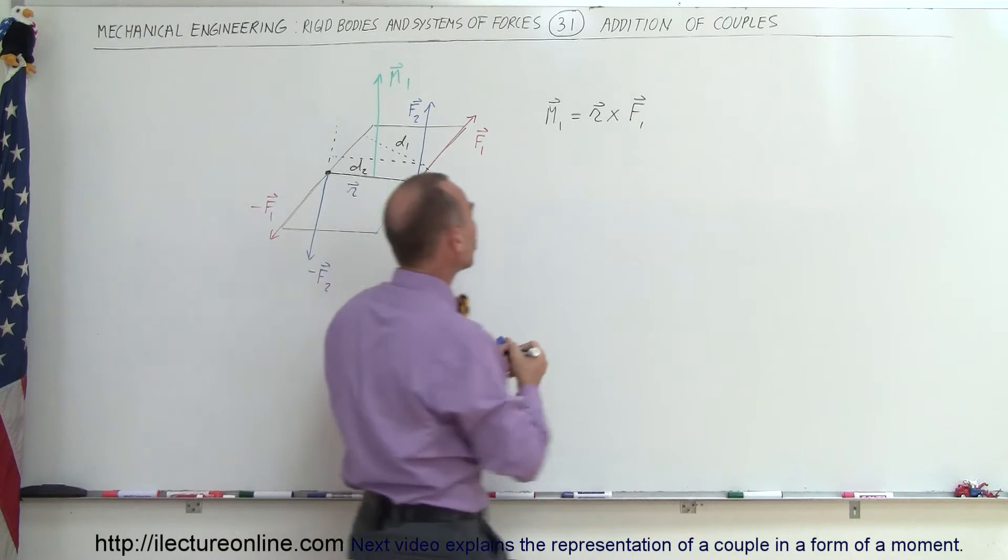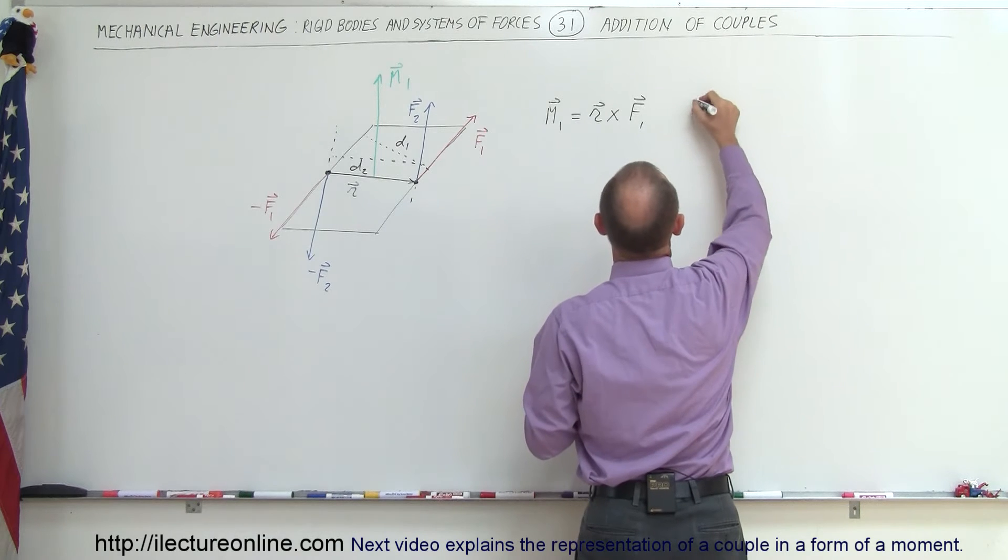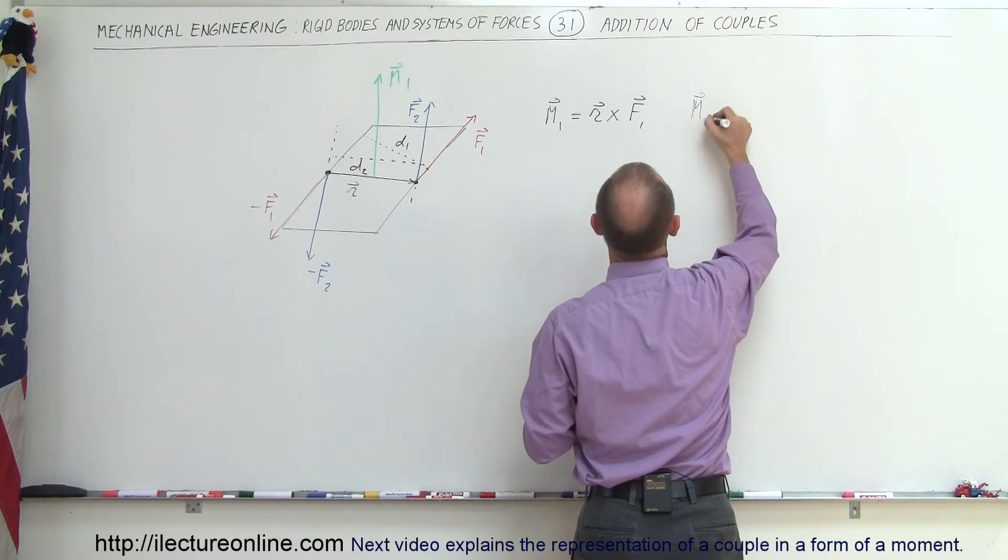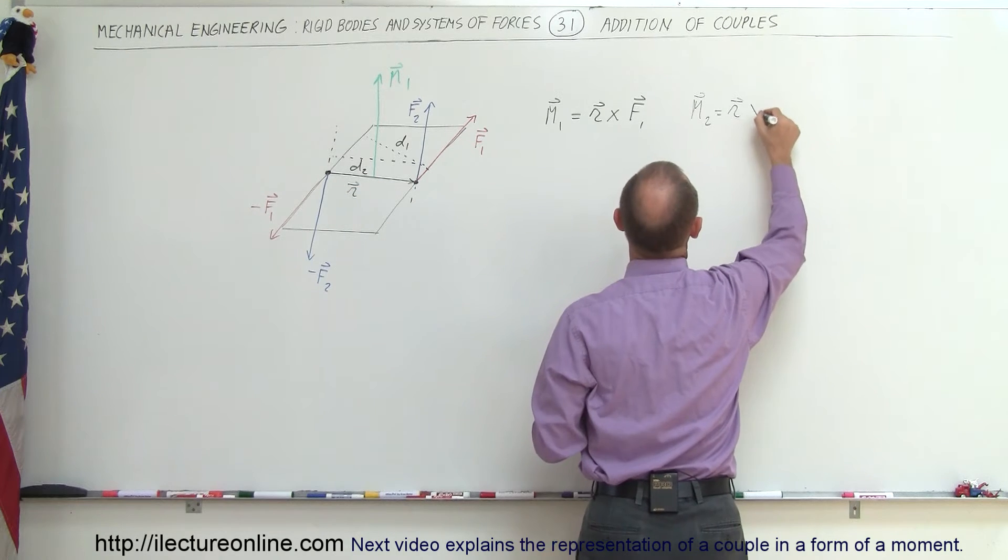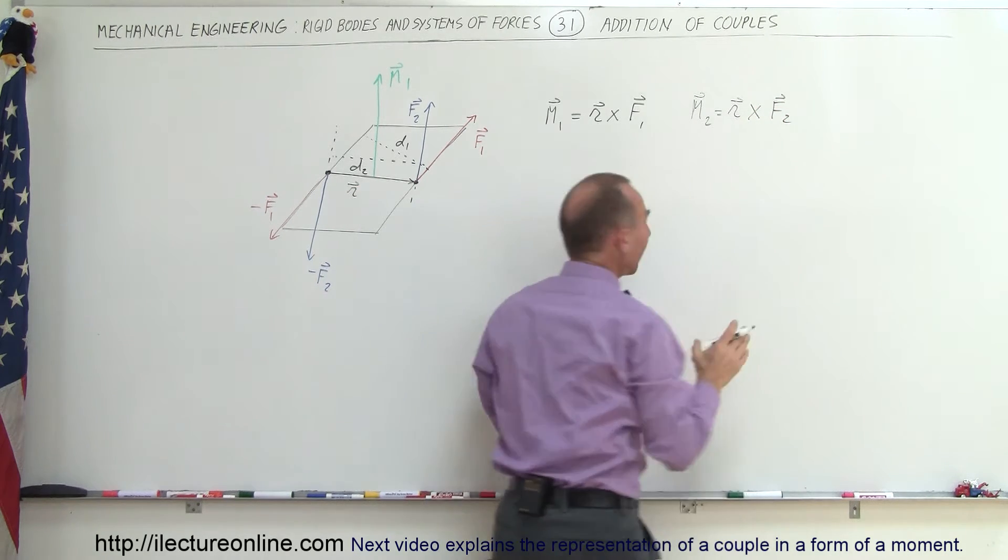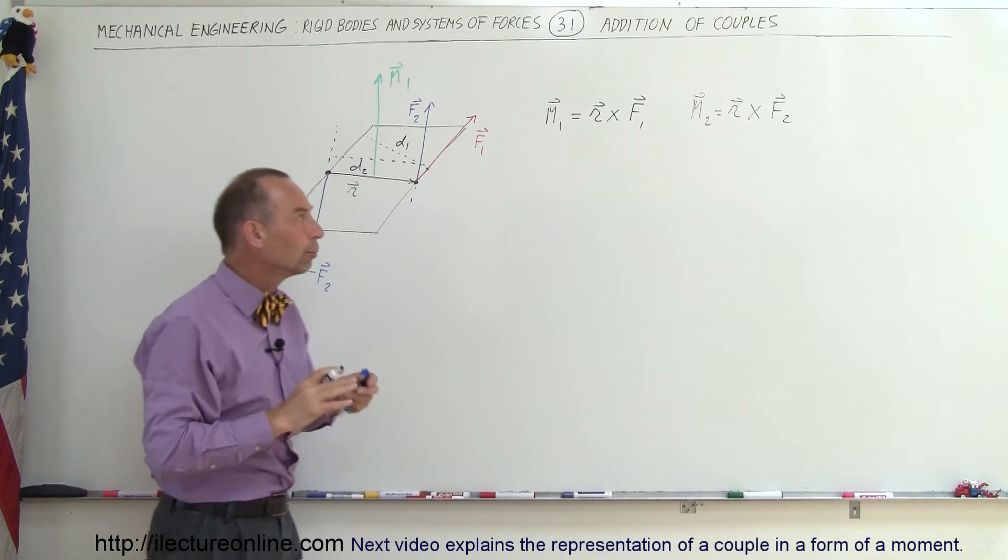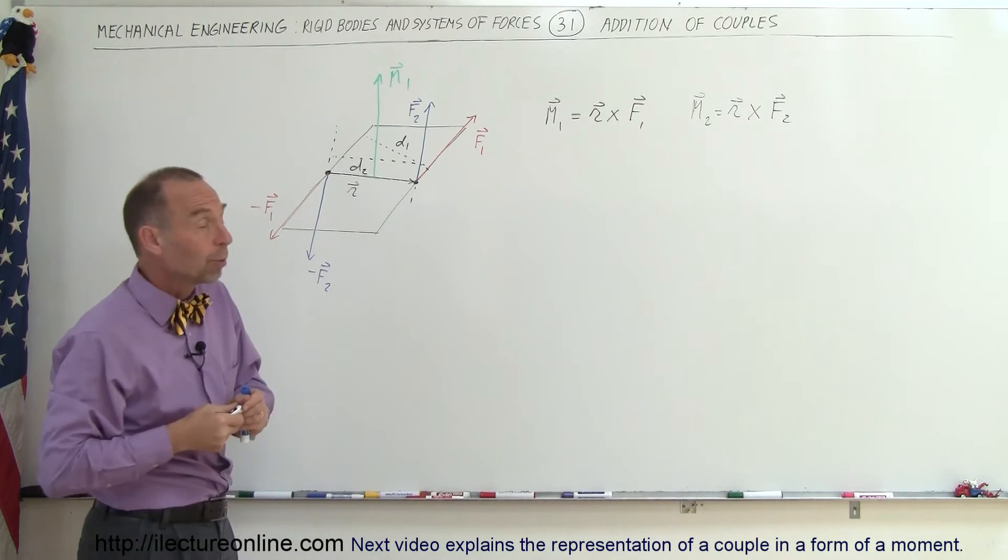And so let's draw the M2. Or at least write the equation for M2. So M2 would be equal to R. It would be the same R multiplied times F2. Now you say, how can you have the same R for both couples and for both moments?